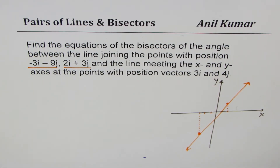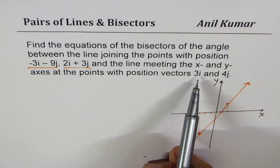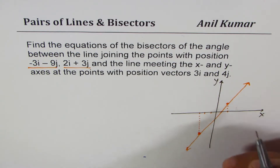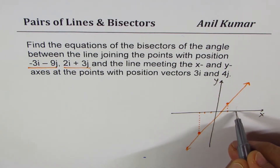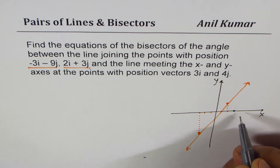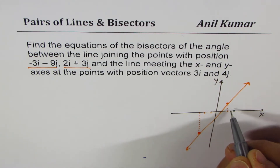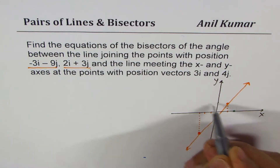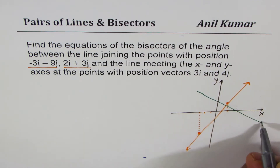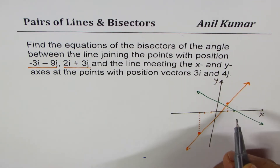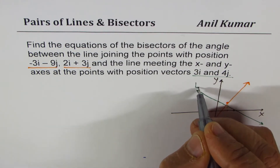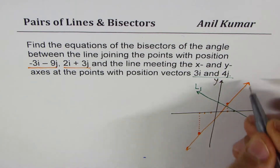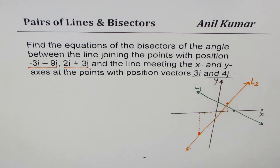Now let's look at the second line, which has x and y intercepts. It says the intercepts are 3i and 4j. So 3i is the x-intercept and 4j is the y-intercept. We'll draw a line joining those two intercept points. That is line L2. So we'll name the first line L1 and the second line L2.